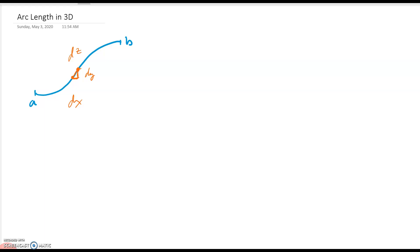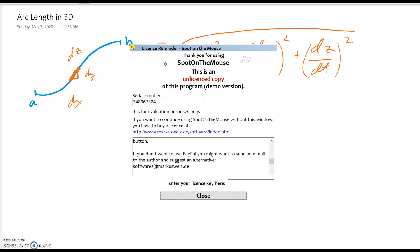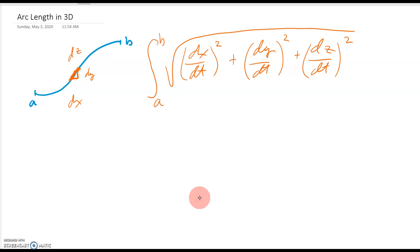And so then using the three-dimensional Pythagorean theorem, we know that the length of that little tiny hypotenuse of that little three-dimensional triangular thing would be dx dt squared plus dy dt squared plus dz dt squared, and then the square root of all that. And so that gives you the length of a tiny little segment along that curve. And then you take the integral from a to b and you're adding up all those little tiny segments together. And then you're taking the limit as those little triangular segments go to zero as well.